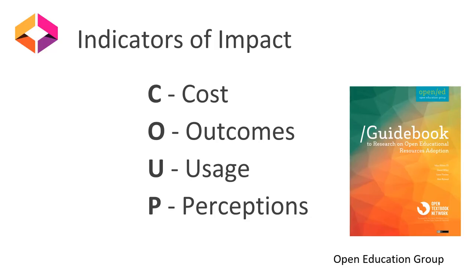We're using the Open Education Group's breakdown of metrics, which is COOP. The Open Education Group developed a framework to research the impact of OER adoption. This framework is broken down into four pieces: C for cost, O for outcomes, U for usage, and P for perceptions. We're going to take a look at each of these indicators in the following slides.